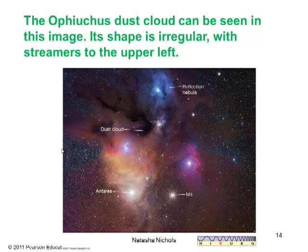This beautiful picture shows the Ophiuchus dust cloud, and as you can see its shape is irregular, with streamers to the upper left. It resides about 170 parsecs away, so it's closer to us than the Orion Nebula. It is surrounded by colorful stars and nebulae that are actually small illuminated parts of a much bigger and invisible molecular cloud. The dark cloud itself is visible only because it blocks light coming from stars behind it. The bright giant star Antares, the star cluster M4, and a nearby blue reflection nebula are also noted.